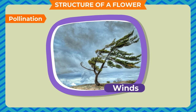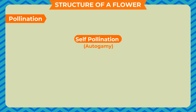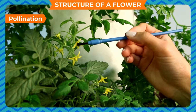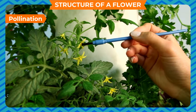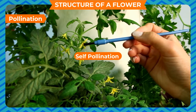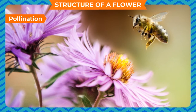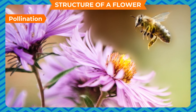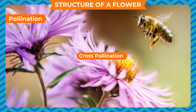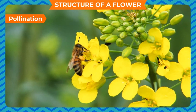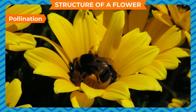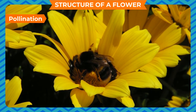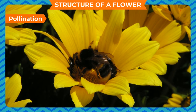Pollination is of two types: self-pollination (autogamy) and cross-pollination (allogamy). If pollination takes place within the same flower or between flowers on the same plant, it is self-pollination. If it takes place between flowers on different plants of the same kind, it is cross-pollination. Cross-pollination is more common as different characters can be combined, resulting in better progeny or offspring.